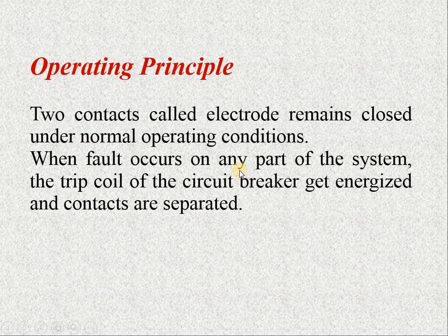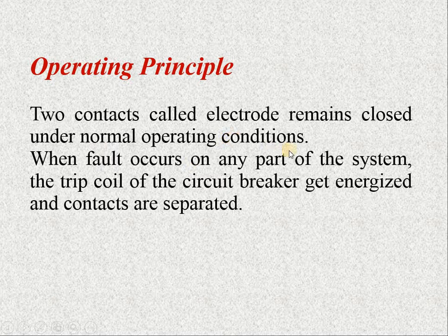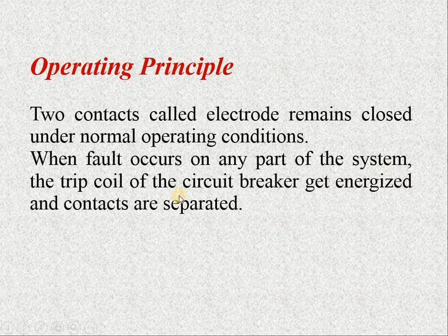The next point is operating principle. The two contacts called electrodes remain closed under normal operating conditions, that means at the rated value of voltage, current, frequency and phase angle phi. When a fault occurs on any part of the system, the trip coil of the circuit breaker gets energized and the contacts are separated.